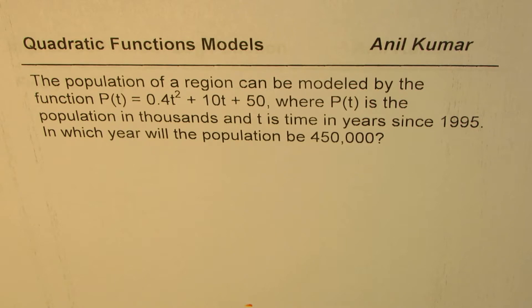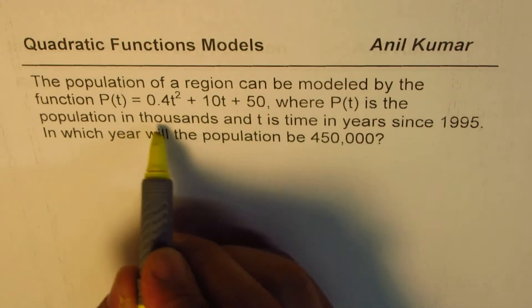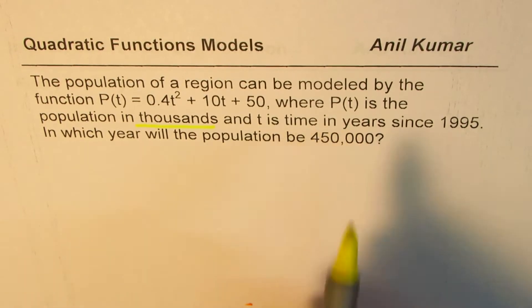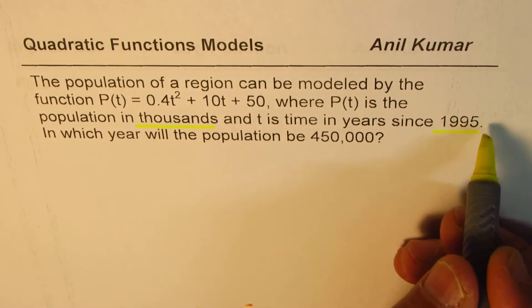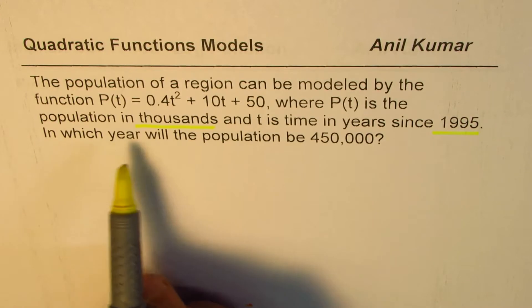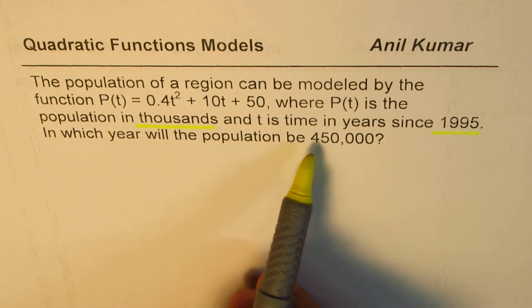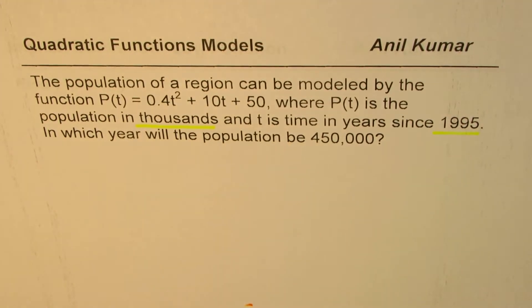The question here is, the population of a region can be modeled by the function P(t) = 0.4t² + 10t + 50, where P(t) is population in thousands, remember population in thousands, and t is time in years since 1995. In which year will the population be 450,000? That's the question for you.